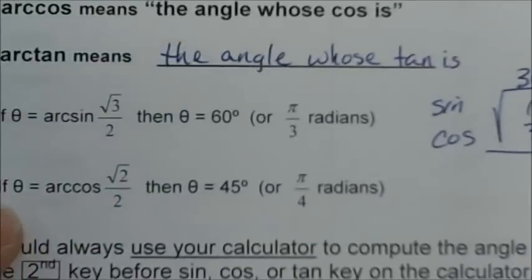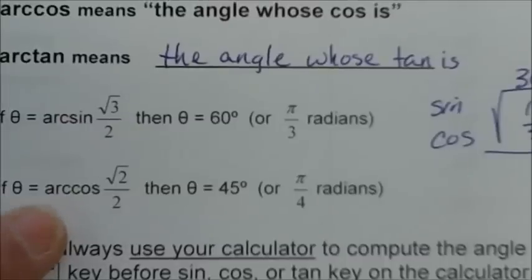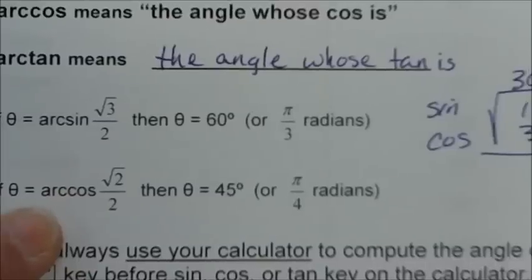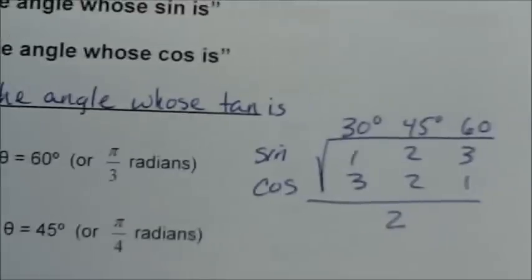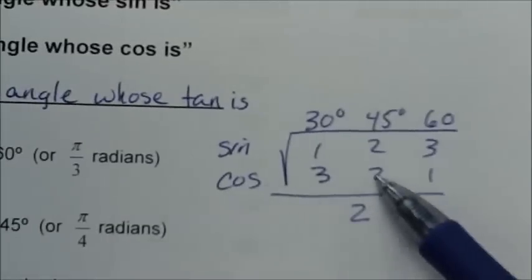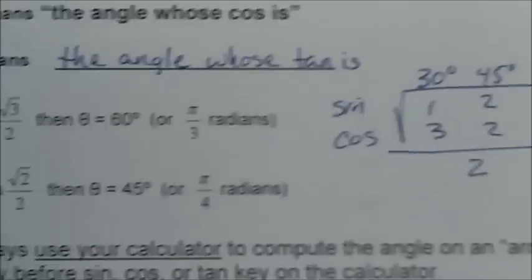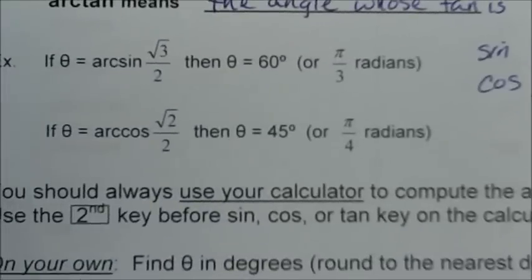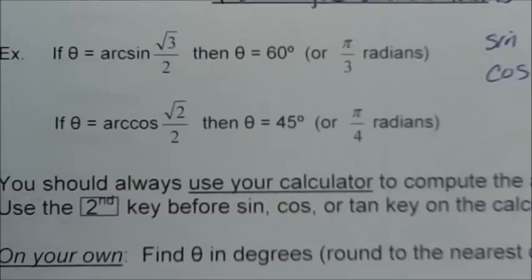If theta equals arc cosine of the square root of 2 over 2, we're looking for the angle whose cosine is the square root of 2 over 2. Cosine of square root of 2 over 2 is our 45 degree angle. You should always use your calculator to compute the angle of an arc problem — use the second key before sine, cosine, or tangent on the calculator. Whenever we're finding angle measure, we do second and then the trig function.